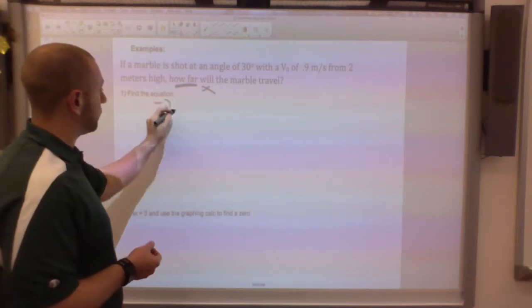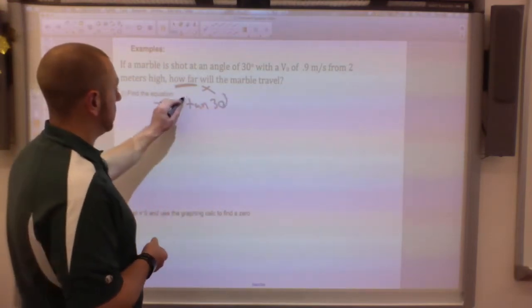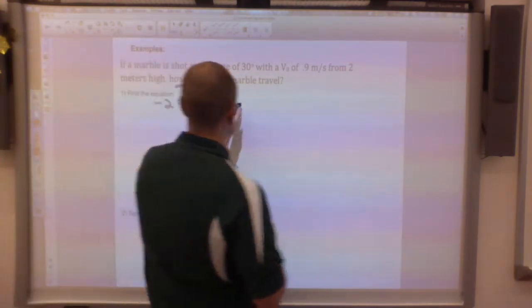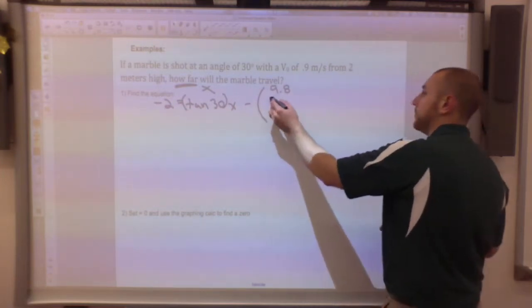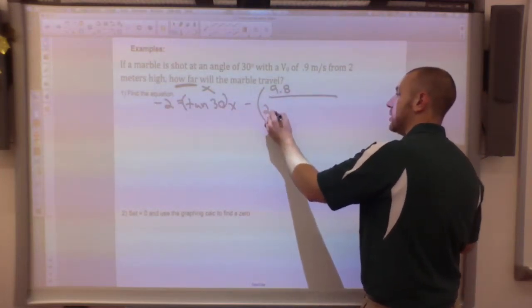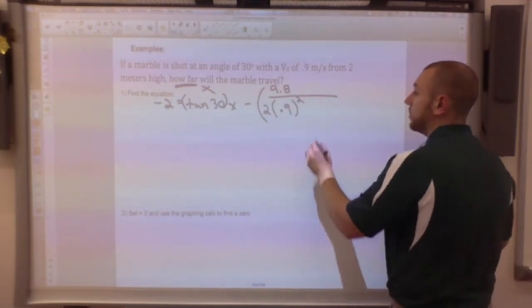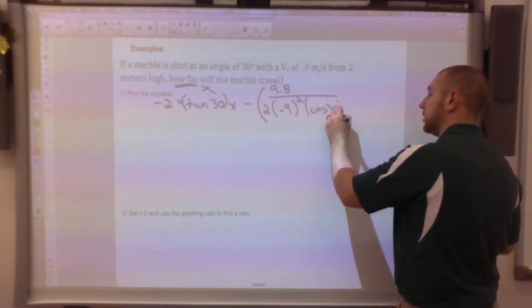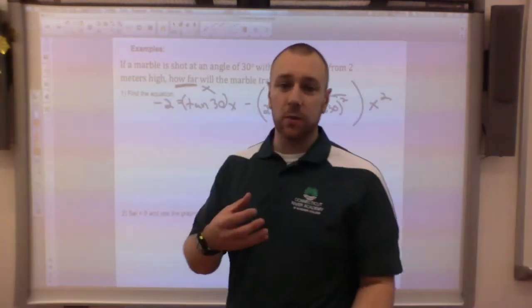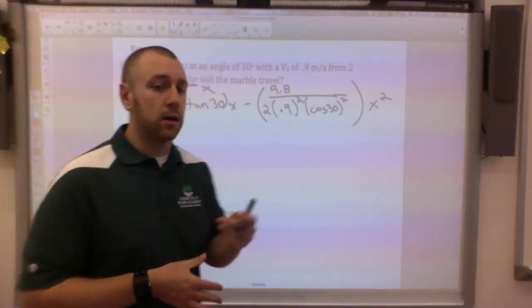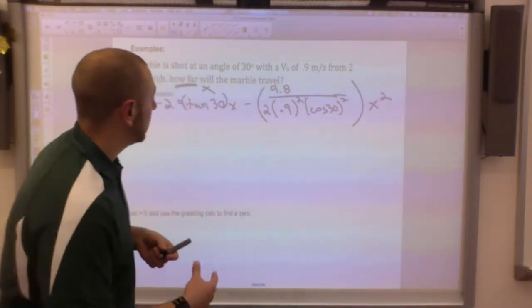So negative two equals my tangent of 30 times x minus 9.8 over two times my initial velocity squared, 0.9 squared, times my cosine of my angle which is 30 squared, x squared. The x's I'm not plugging anything into because it's going to take the form of a quadratic.